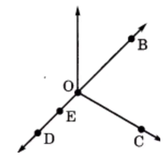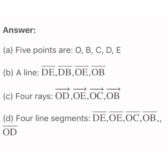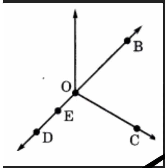We will find the 5 points in this figure. The 5 points are point O, point B, point C, point D, and point E. Now we have to find a line in this figure.